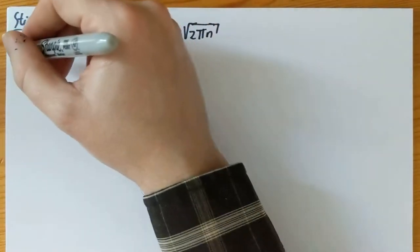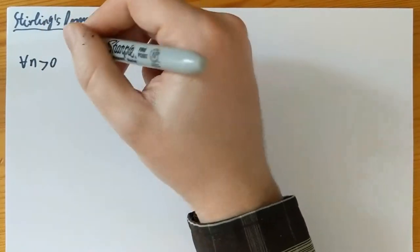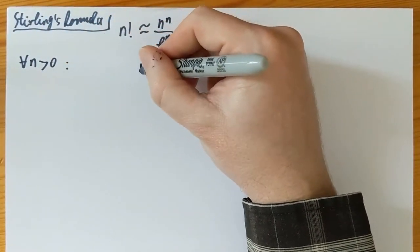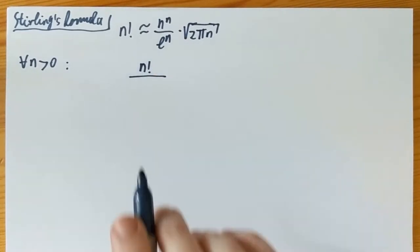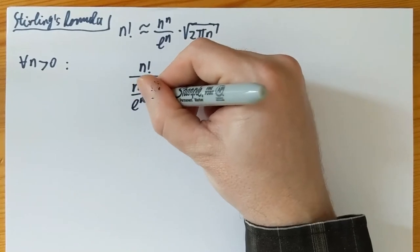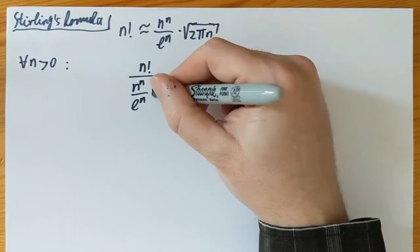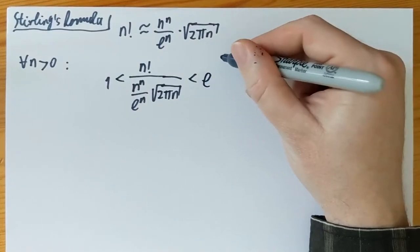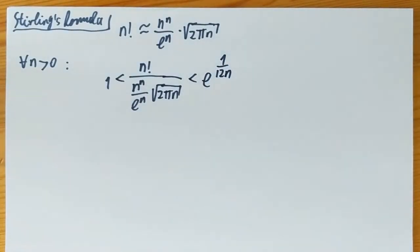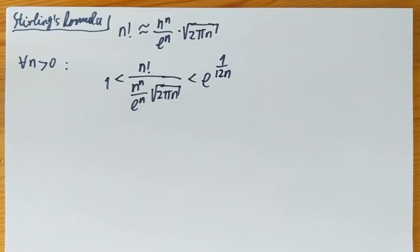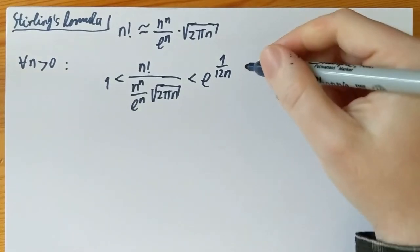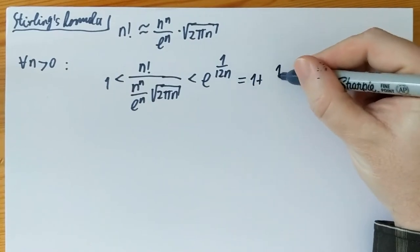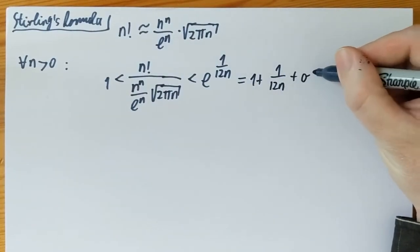To be precise: for every n at least 1, we have that the ratio — if I divide n factorial by the approximation formula, namely n to the n over e to the n, multiplied by the square root of 2πn — is always larger than 1, but not by much. Namely, I have an upper bound of e to the 1 over 12n on the right-hand side. This is clearly close to 1 as n gets very large. In fact, it's worth mentioning that this is 1 plus 1 over 12n plus little-o of 1 over n.